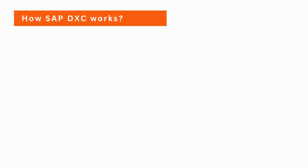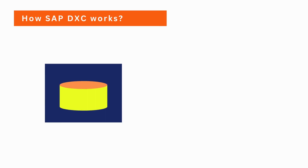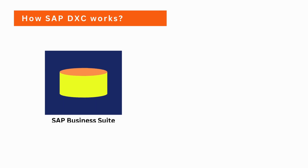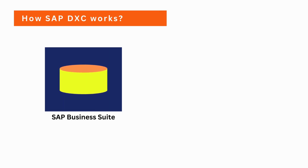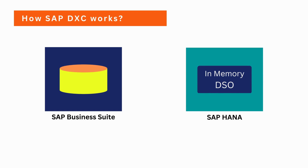Let's now see how SAP DXC works internally. For example, if you have been using SAP Business Suite for a long time and you recently provisioned a SAP HANA box for reporting purposes, with SAP DXC you can expose all the data models available in SAP Business Suite to SAP HANA, and load the data from SAP Business Suite to SAP HANA directly.